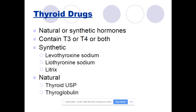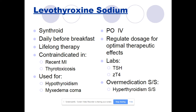Thyroid drugs can be natural or synthetic hormones and contain T3, T4, or both. Synthetic versions include levothyroxine sodium, liothyronine sodium, and liotrix. Natural versions are thyroid USP and thyroglobulin. Levothyroxine sodium, also known as Synthroid, is taken daily before breakfast — it should be scheduled apart from other medications, taken very early in the morning such as 7 a.m. It is lifelong therapy and is contraindicated in patients with a recent cardiac arrest, myocardial infarction, or thyrotoxicosis. It is used for hypothyroidism, myxedema coma, and cretinism, and can be given PO or IV.